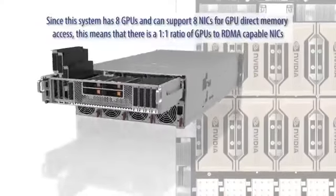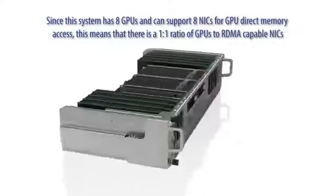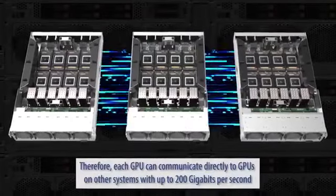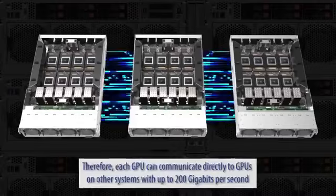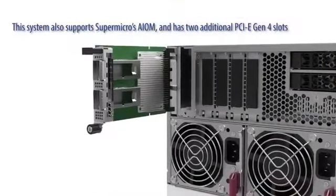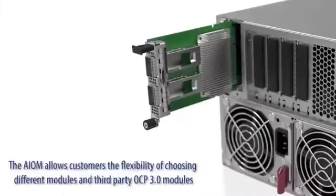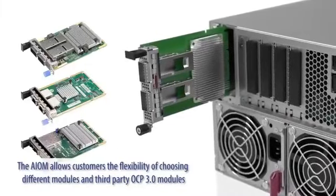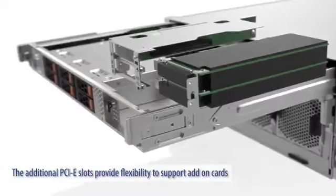Since this system has 8 GPUs and can support 8 NICs for GPU direct memory access, this means that there is a 1-to-1 ratio of GPUs to RDMA-capable NICs. Therefore, each GPU can communicate directly to GPUs on other systems with up to 200 GB per second. This system also supports Supermicro's AIOM and has two additional PCIe Gen 4 slots. The AIOM allows customers the flexibility of choosing different modules and third-party OCP 3.0 modules. The additional PCIe slots provide flexibility to support add-on cards.